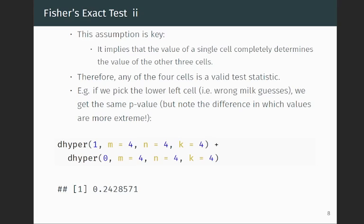And so we picked the top left cell for our experiment, but we could have picked another one of the cells. For example, we could have picked the lower left cell, which corresponds to the wrong milk guesses. And if we go through the same exercise, we get the exact same p-value. But note here that we need to do, there's a bit of a difference in terms of what would be considered an extreme value.